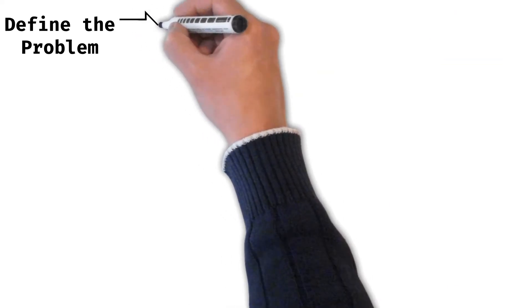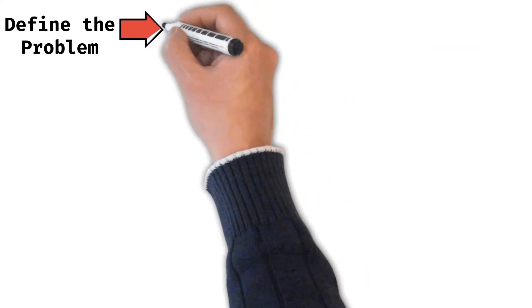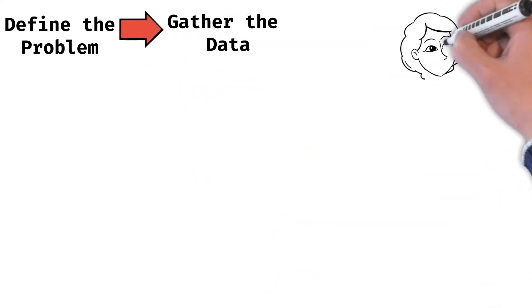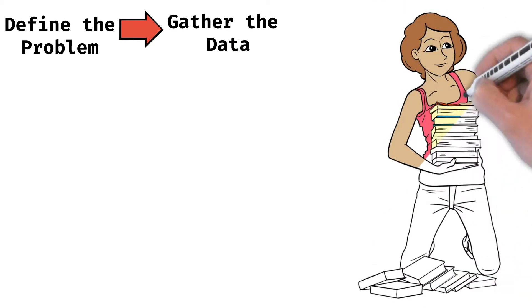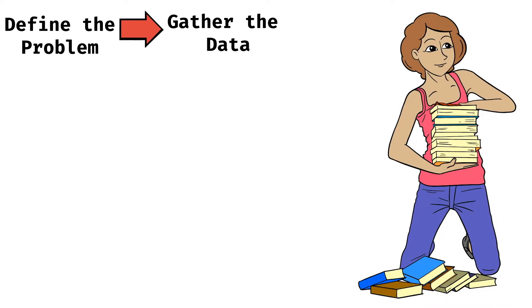Once we have defined our problem, we need to set about gathering the data. Now, data gathering is not a very simple exercise. We need to be very clear where the data is going to be collected from, in what way the data will be collected so that we have a random sample. Also, we need to be very clear what are the different parameters based on which data will be collected, and then we have to collect the whole data and make it available for creating the model.